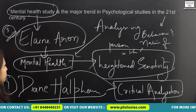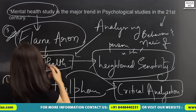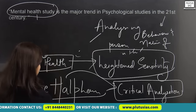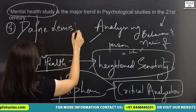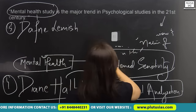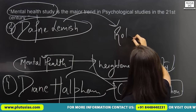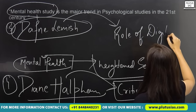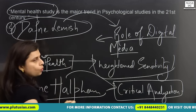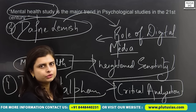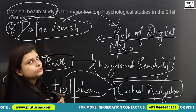You can also talk about Daphne Lemish, who has given emphasis on digital media. You can talk about Daphne Lemish and emphasize the role of digital media on mental health — what kind of effect digital media creates on the mental health of a person. This person has spoken very strictly about the influence of digital media on mental health.